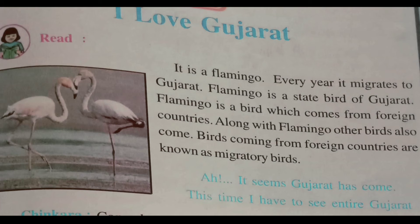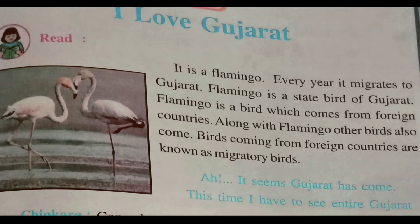The picture you are seeing here is a flamingo, a small bird. Every year it migrates to Gujarat. Migration means moving from one place to another when the weather changes. This is called migration.